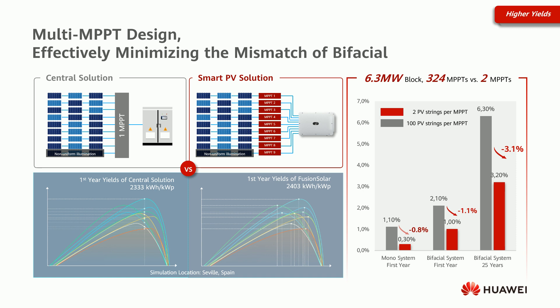As our historical data shows, with a mono system in the first year there is almost 1% difference in produced energy on a 3.3 MW block. And even higher with a bifacial system — in the first year there is more than 1% difference in yield energy. With degradation and modification of the PV modules over 25 years, there is more than 3% loss of energy compared to central solutions.